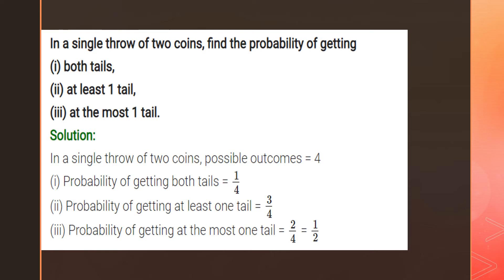What is the probability of getting at most one tail? At most one tail means the maximum should be one tail. The favorable outcomes are: head-tail and tail-head. So the probability is two by four, which simplifies to one by two.